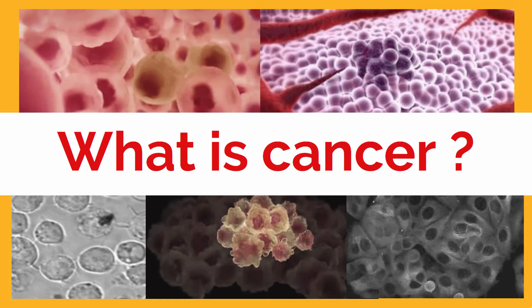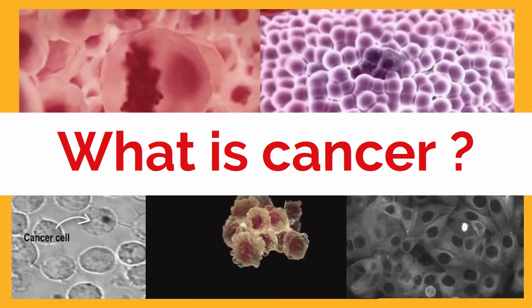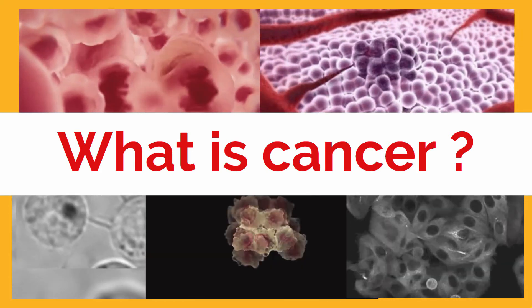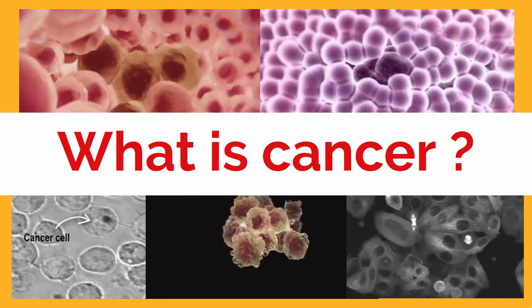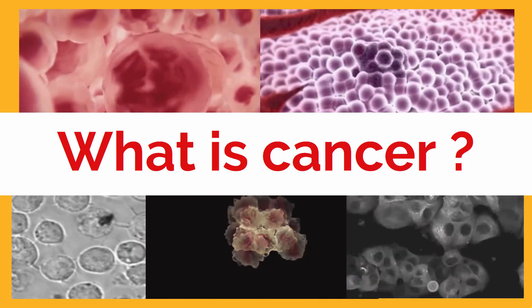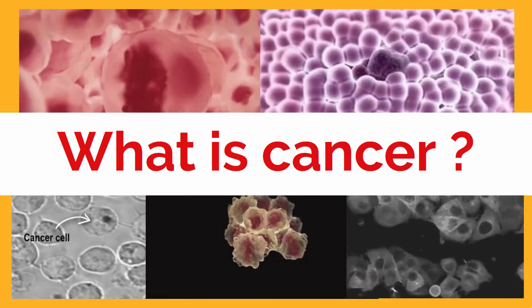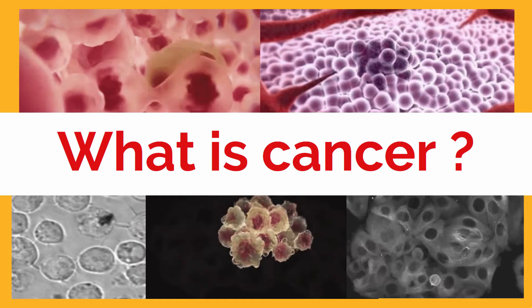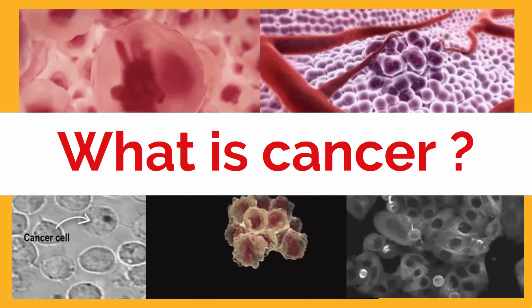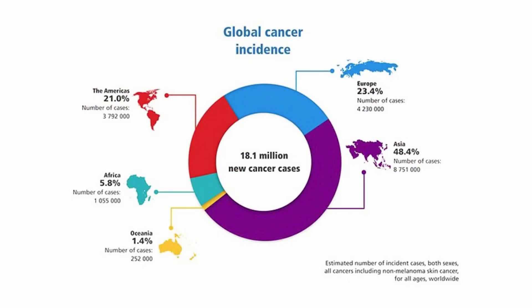Let's explore further. Cancer is a disease caused by an uncontrolled division of abnormal cells in a part of the body. When cancer develops, cells become more and more abnormal as old or damaged cells survive when they should die, while new cells form when they are not needed. According to the International Agency for Research on Cancer, it is highly important to figure out a quick and effective diagnosis towards cancer, as statistics show that 18.1 million new cancer cases have been estimated to occur all around the world.